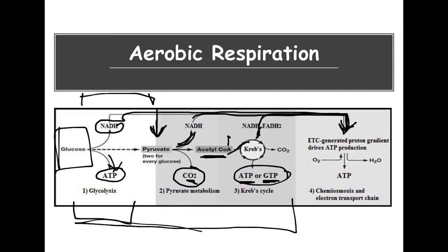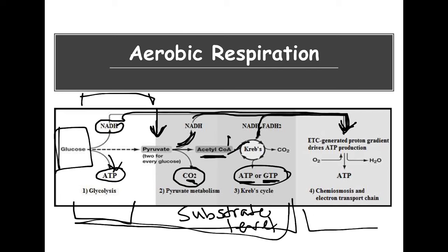Any ATP that was made directly during the earlier stages — glycolysis and Krebs — would be from substrate-level phosphorylation. At the electron transport chain, we use oxidative or redox-type properties and something called chemiosmosis to make ATP. At the end of the day, tons of ATPs are generated through oxidative phosphorylation — that's associated with the electron transport chain. So this is the overview; now let's look at the details.